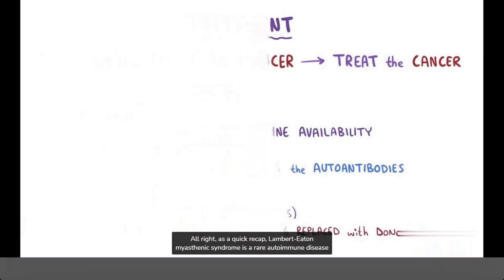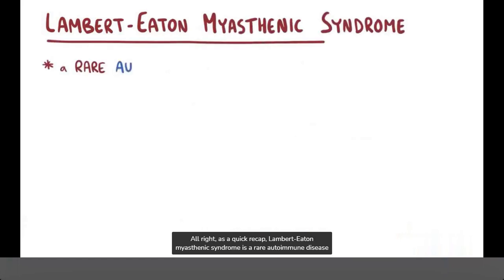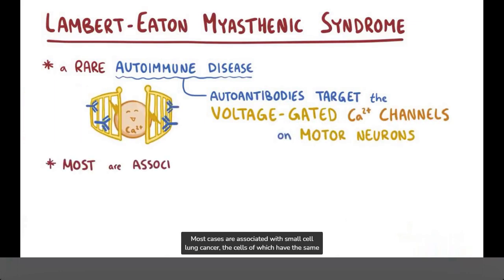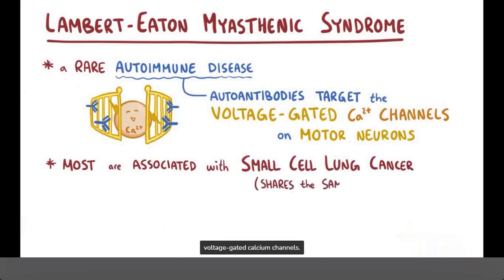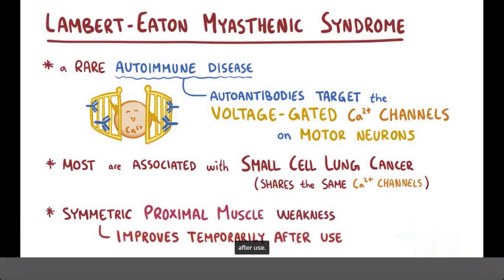As a quick recap, Lambert-Eaton myasthenic syndrome is a rare autoimmune disease caused by autoantibodies that target the voltage-gated calcium channels on motor neurons. Most cases are associated with small cell lung cancer, the cells of which share the same voltage-gated calcium channels. Typically, there's symmetric muscle weakness of the proximal muscles that improves temporarily after use.